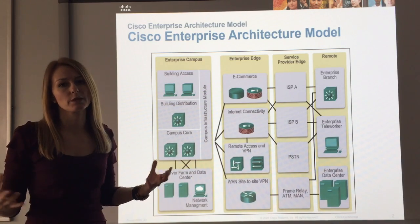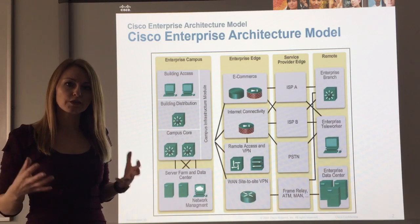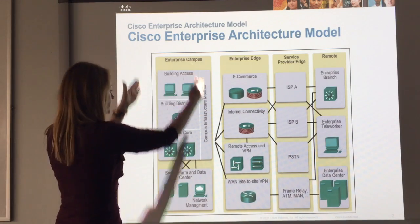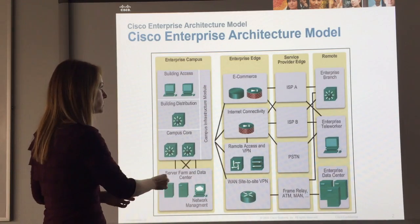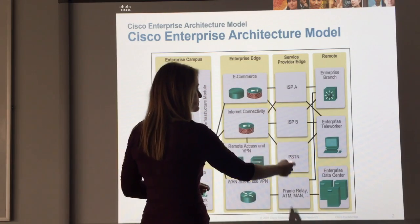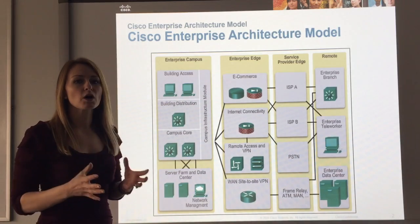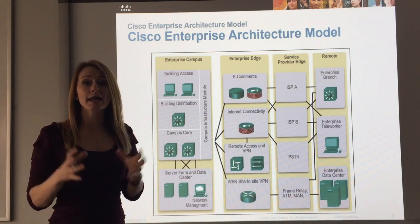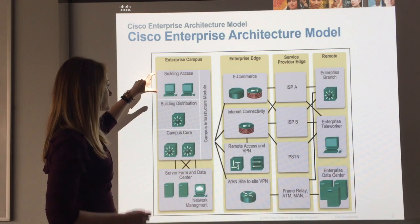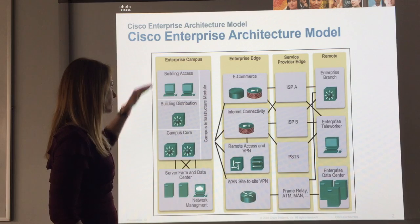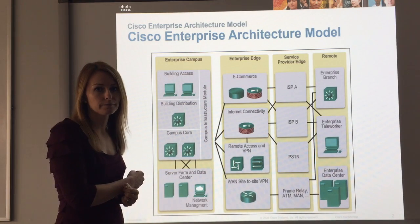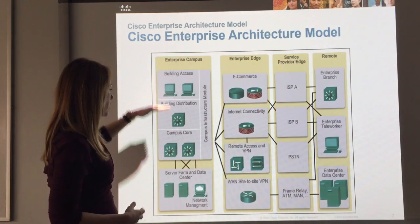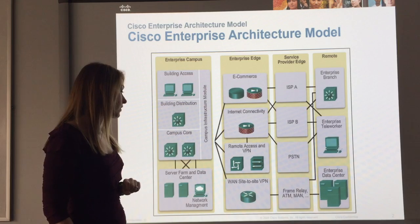This would be typical for a campus scenario. If you picture a campus like a university campus, you've got various buildings that all need to communicate to one another but they're separated by short distances. So here we've got the enterprise campus module, the enterprise edge module, the service provider edge, and then the remote module. These modules group like things together. The enterprise campus module is a network within itself - you've got the building access layer, the building distribution layer, and the campus core layer. This is made up of the hierarchical network we saw in the last slide. Everything in this module is what's happening on campus - your typical hierarchical network as well as a server farm and data center.